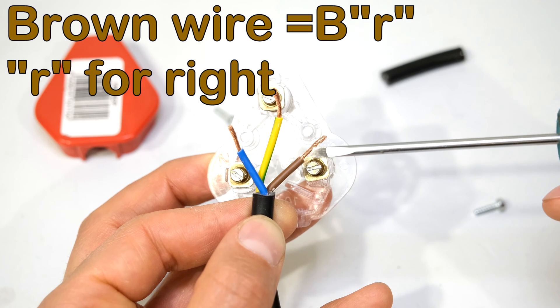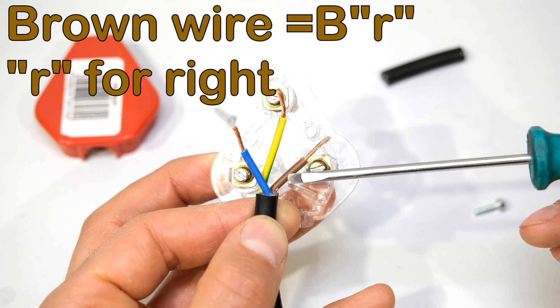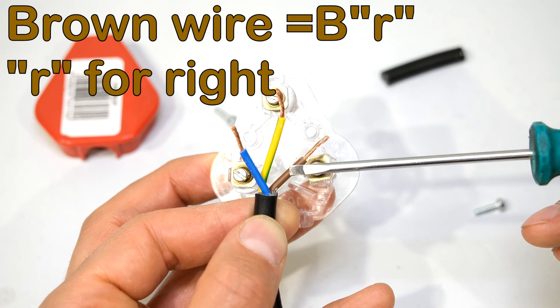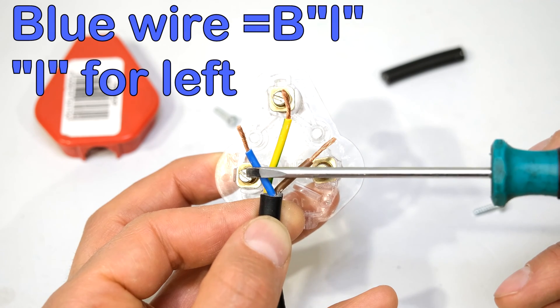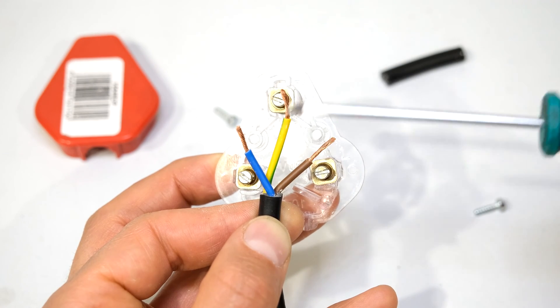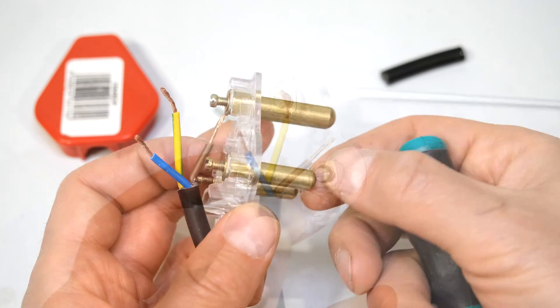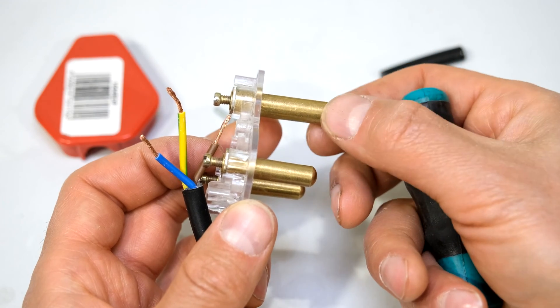Now the brown wire, that's the live wire. The brown wire goes to the right. Listen to the word: Brown, B-R, R for right. The blue wire goes to the left. Listen to the word: Blue, B-L, L for left. The neutral wire goes to the left. The earth wire is the longer one that goes in the middle. You'll also notice that the earth pin is longer and fatter.